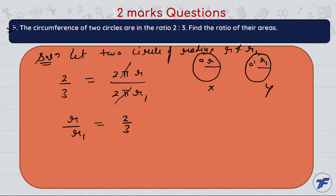So r1 — let's say r = 2k and r1 = 3k, where k is a constant. So the ratio is 2k to 3k. The radius of the first circle is 2k and the radius of the second circle is 3k.